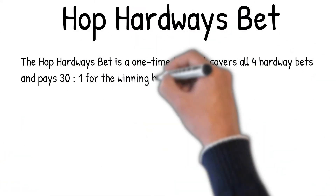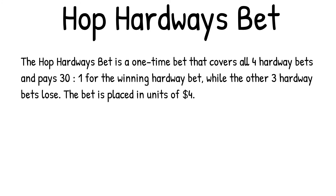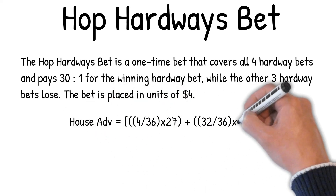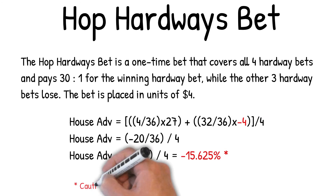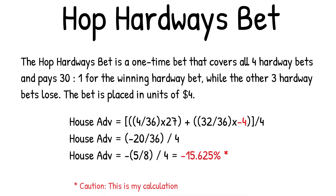The Hop Hardways bet is a one-time bet that covers all four hardway bets and pays 30 to one for the winning hardway while the other three lose. The bet is placed in units of four dollars. House advantage equals four out of 36 chances to hit a hopping hardway times 27 win, plus 32 out of 36 chances to lose times minus four, divided by a four dollar bet: minus 20 over 36 divided by four equals minus five-eighths divided by four, equals minus 15.625% house advantage.